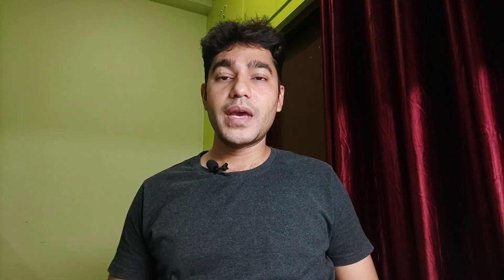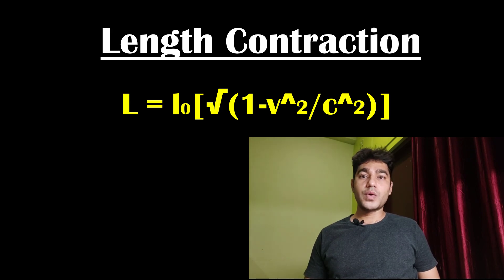Moving at relativistic speed not only affects mass and time but also length. If you move at a speed close to the speed of light, your length will contract in the direction of travel. This is expressed by the formula: l = l₀ √(1 − v²/c²). This phenomenon is called length contraction.